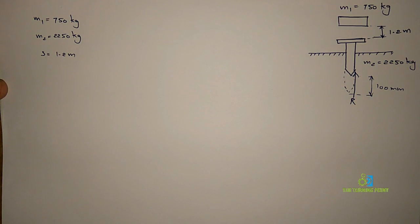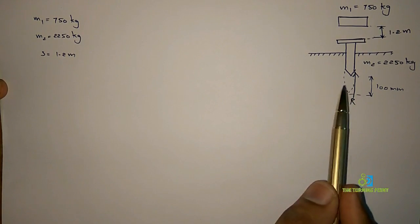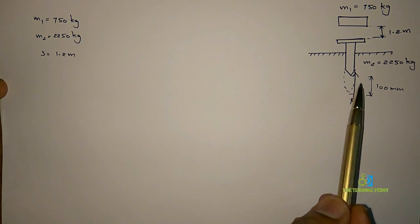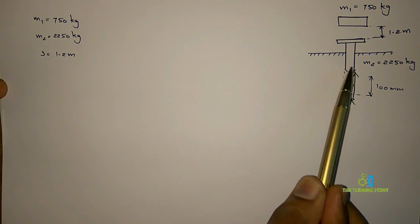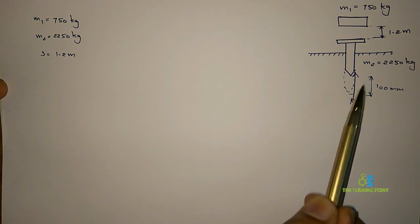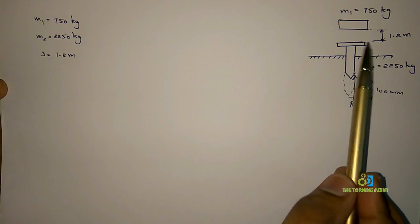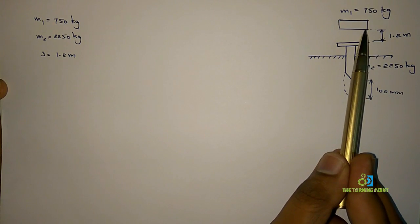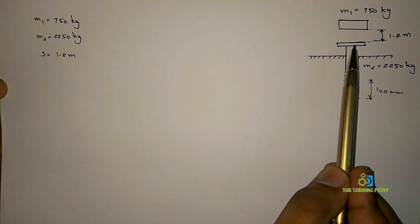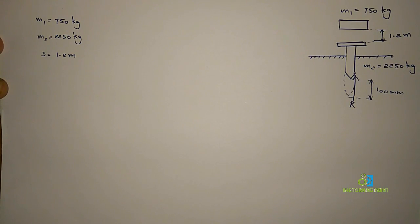This is a problem associated with the law of conservation of momentum and the work-energy theorem. Using the law of conservation of momentum first, we will find with what velocity the pile is penetrated into the ground. For that, we first have to find with what velocity the hammer impacts the pile.